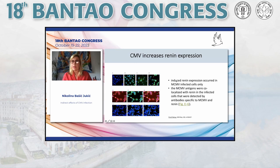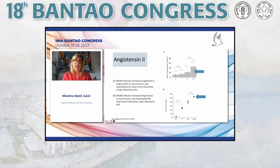CMV increases renin expression, and this renin expression occurred only in cells infected with CMV. CMV antigens were co-localized with renin in infected cells detected by antibodies specific to mouse CMV and renin. Serum angiotensin II was elevated in mouse sera and tissues from animals infected by CMV.